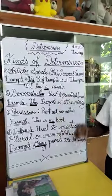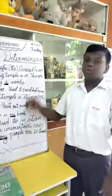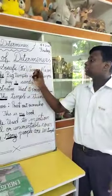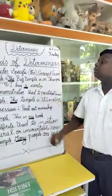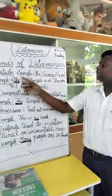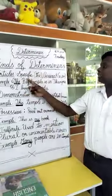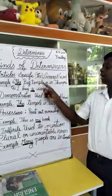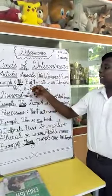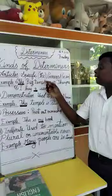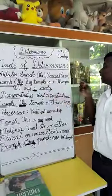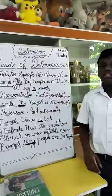Mainly, there are 2 types of articles — general and specific. Now, in articles, the specific determiner is 'the'. For example, the big temple is in Tanjore.